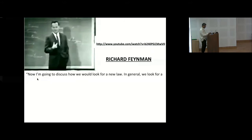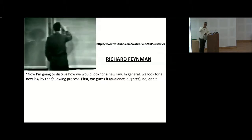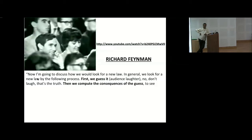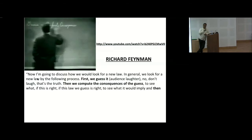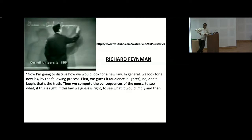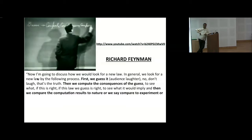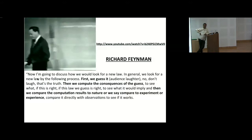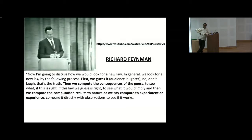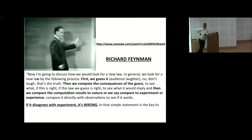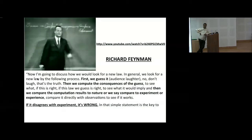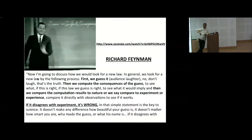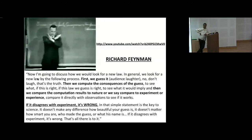I'll close with a Richard Feynman clip: 'We look for a new law by the following process. First we guess it. Then we compute the consequences of the guess. And then we compare those computational results to nature or experiment. If it disagrees with experiment, it's wrong. It doesn't matter how beautiful your guess is, how smart you are, or what your name is. If it disagrees with experiment, it's wrong. That's all there is to it.'